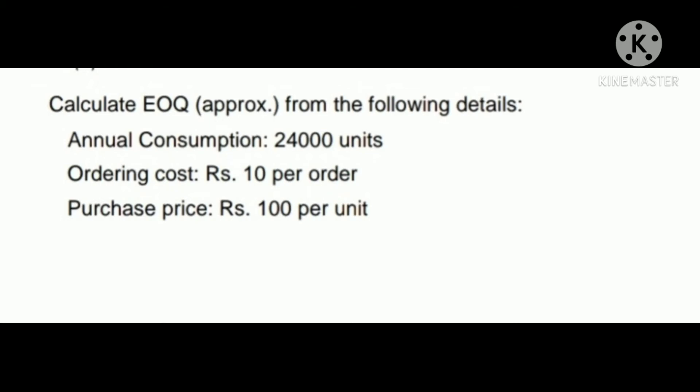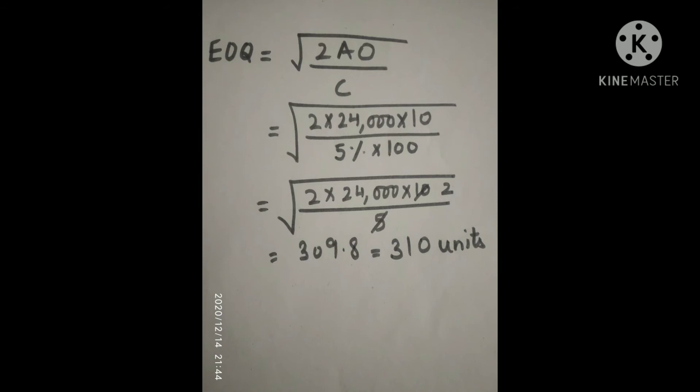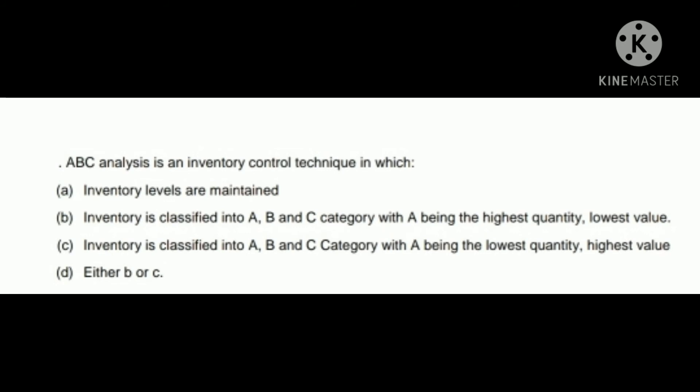Calculate EOQ: annual consumption 24,000 units, ordering cost ₹10 per order, purchase price ₹100 per unit, carrying cost 5%. Options: 310 / 400 / 290 / 300. EOQ formula = √(2AO/C). Carrying cost = 5% × 100 = 5. EOQ = √(2 × 24,000 × 10 / 5) = √96,000 = 310 units. Option A is correct. A lecture on EOQ is linked in the description box.